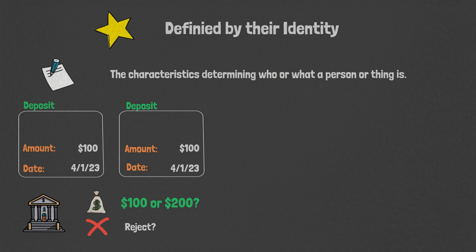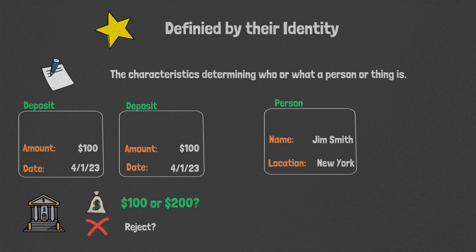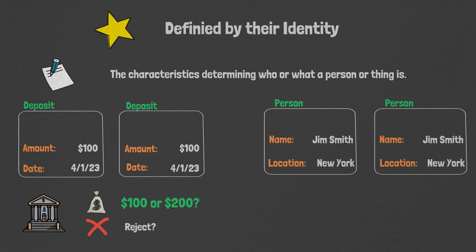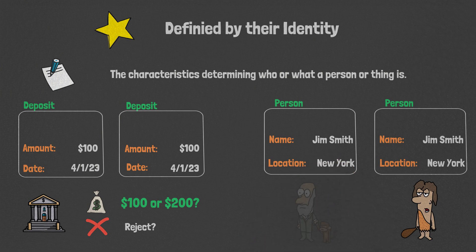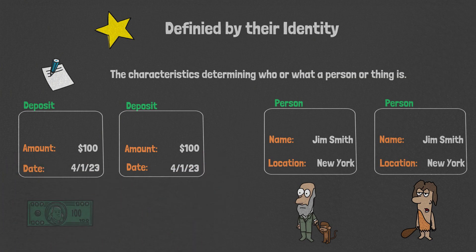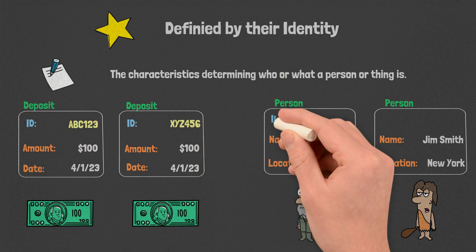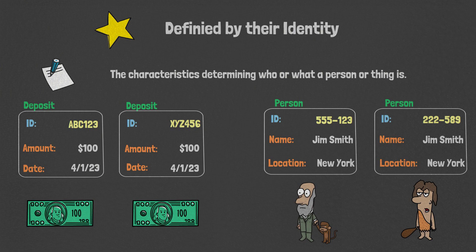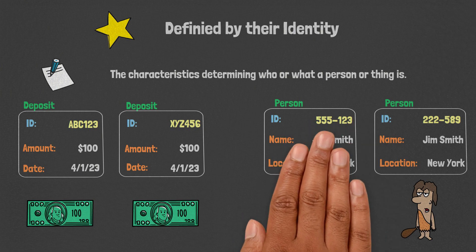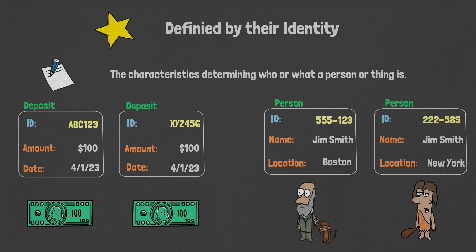Or let's look at another example. Consider we have Jim Smith from New York and another Jim Smith from New York. Are these the same person? When we look at these two examples from a conceptual level, it's possible that there are two different Jim Smiths living in New York. It's also possible that there are two transactions for the same amount on the same date. What these examples illustrate is that while these objects share the same attributes, they are defined by their identities.